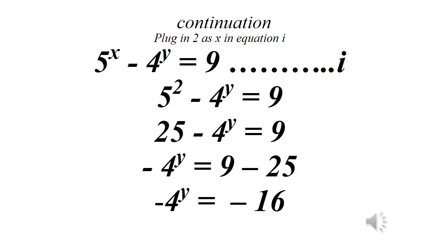Now we plug in x equals 2 into equation 1: 5 raised to power x minus 4 raised to power y equals 9. Substituting gives us 5 squared minus 4 raised to power y equals 9. Since 5 squared equals 25, we have 25 minus 4 raised to power y equals 9.